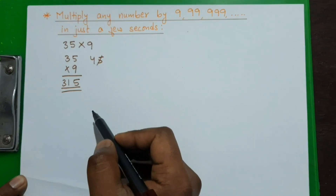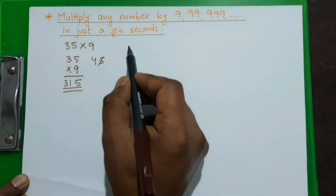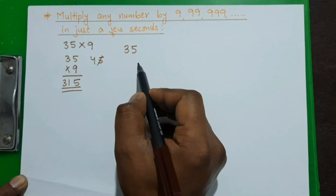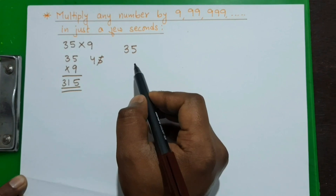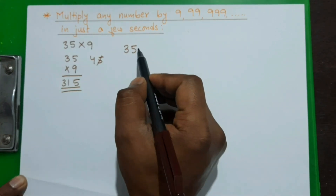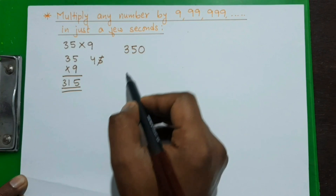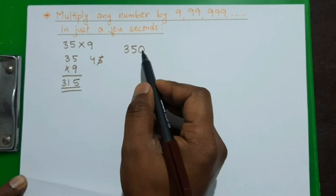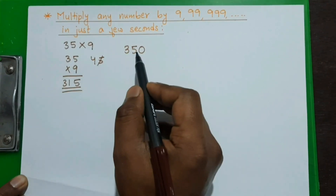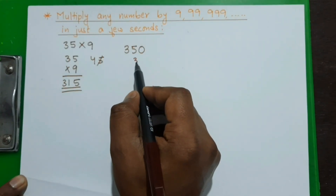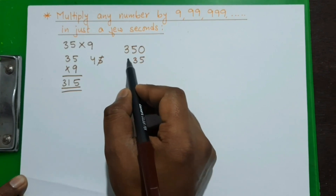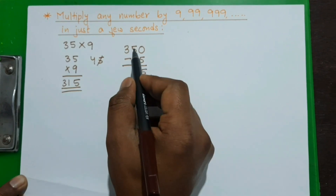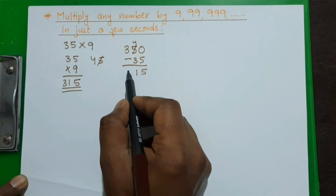Now we are going to learn a short calculation method. In this method, first we multiply the given number by 10 — that is very simple, we just put a zero behind the number. Then in the second step we subtract the original number from this product. So we subtract 35 from 350, and subtracting we get 315.